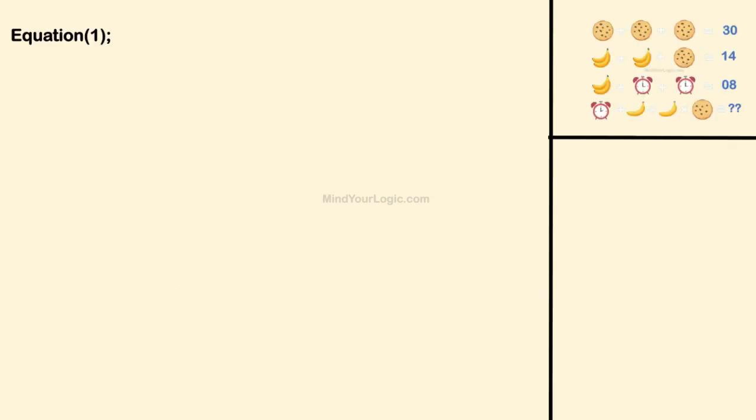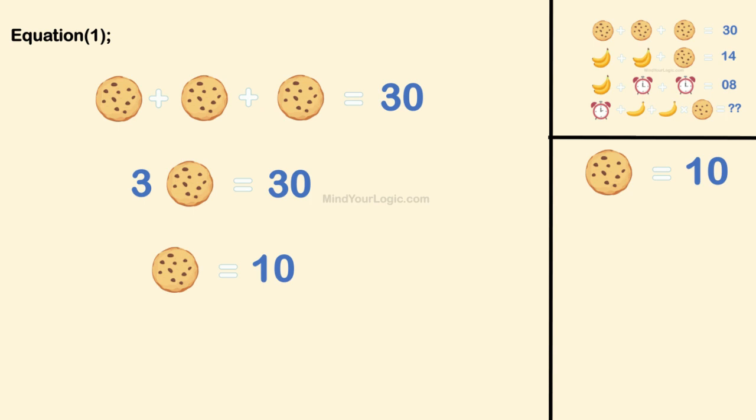Equation 1 is simple. Cookie plus cookie plus cookie equals 30. 3 cookies equals 30. Cookie equals 10, as 10 chips over it.